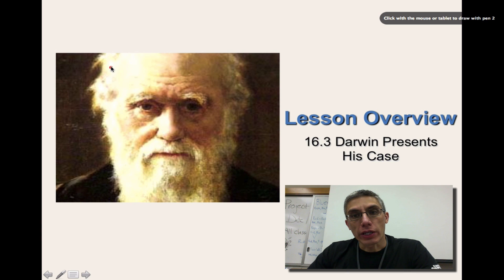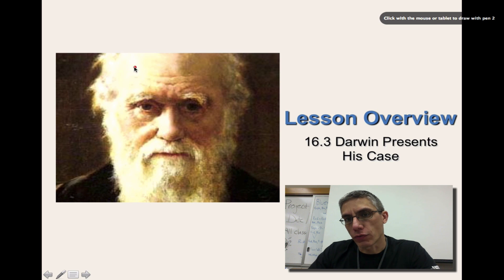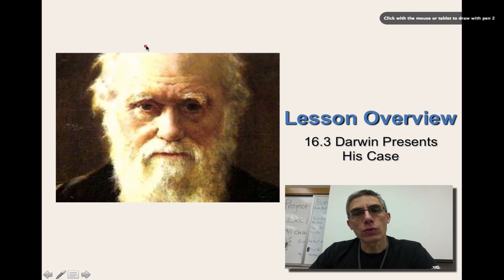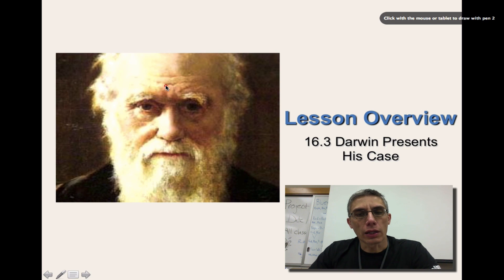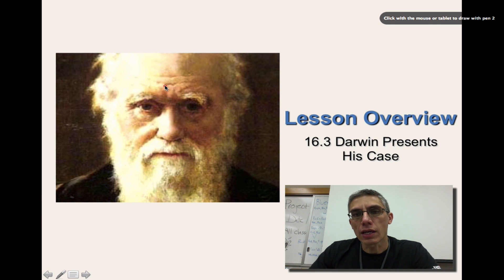Welcome back. This is screencast number two for chapter 16. If you remember back to our very first screencast for Evolution, right before we started our work sample, we had looked at 16.1 and 16.2. For those two particular sections, they focused primarily on Charles Darwin — the man you see right here — to get a little history on him and think about the evidence he collected in regards to proving his case that evolution actually does exist.